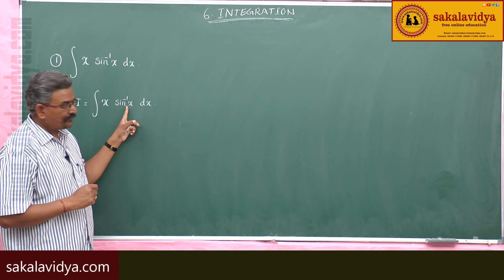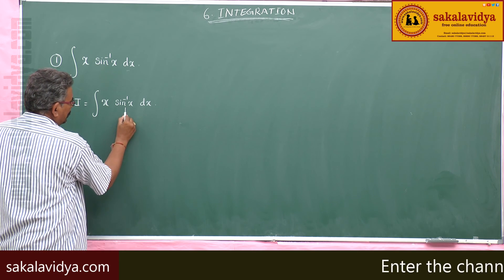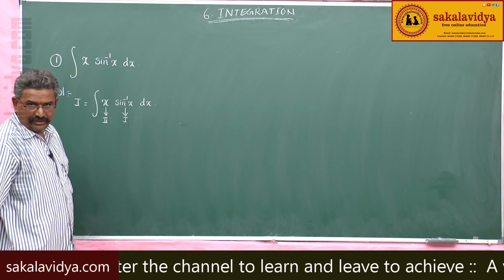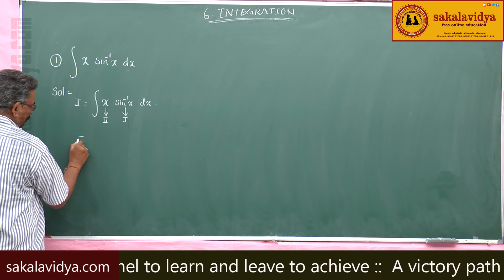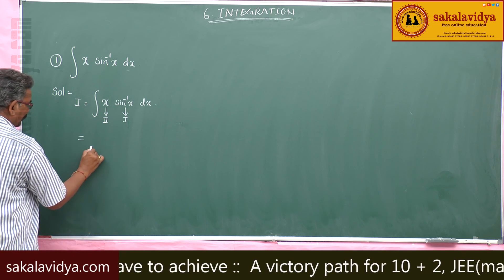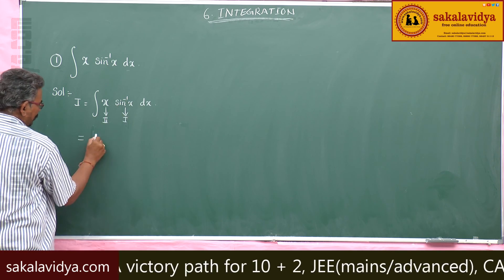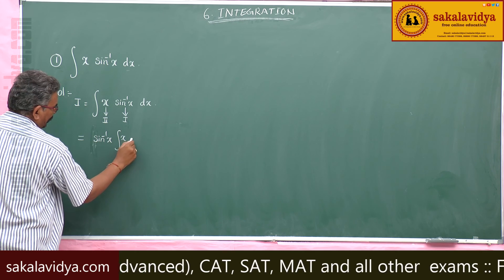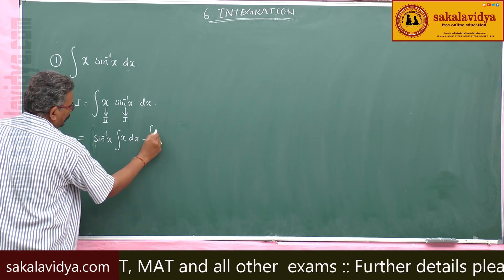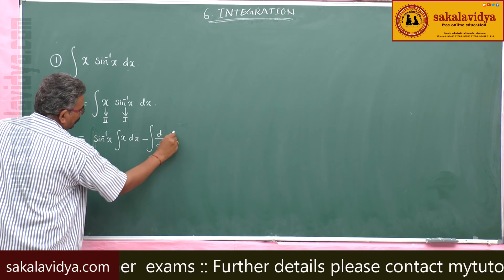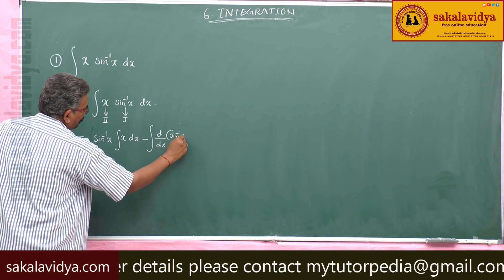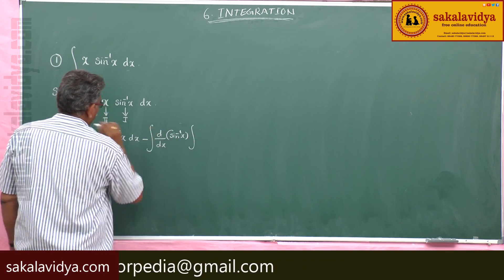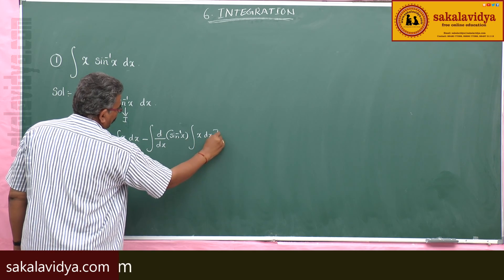So the first function is sin⁻¹x and the second function is x. Now applying the integration by parts formula: integral of first function (sin⁻¹x) times integral of second function (x dx), minus the integral of the derivative of the first function (sin⁻¹x) times the integral of the second function (x dx), all with respect to dx.